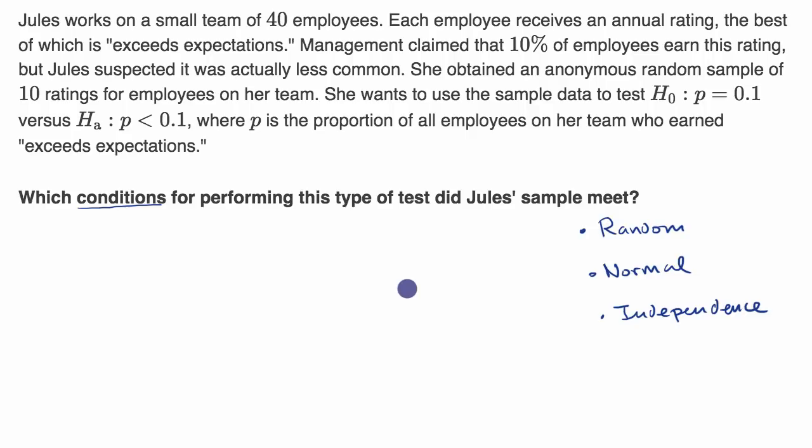All right, now let's work through this together. Let's just remind ourselves what we're going to do in a significance test. We have our null hypothesis, we have our alternative hypothesis. What we do is we look at the population - there's 40 employees on staff at this company. We take a sample. In Jules' case, she took a sample size of 10.